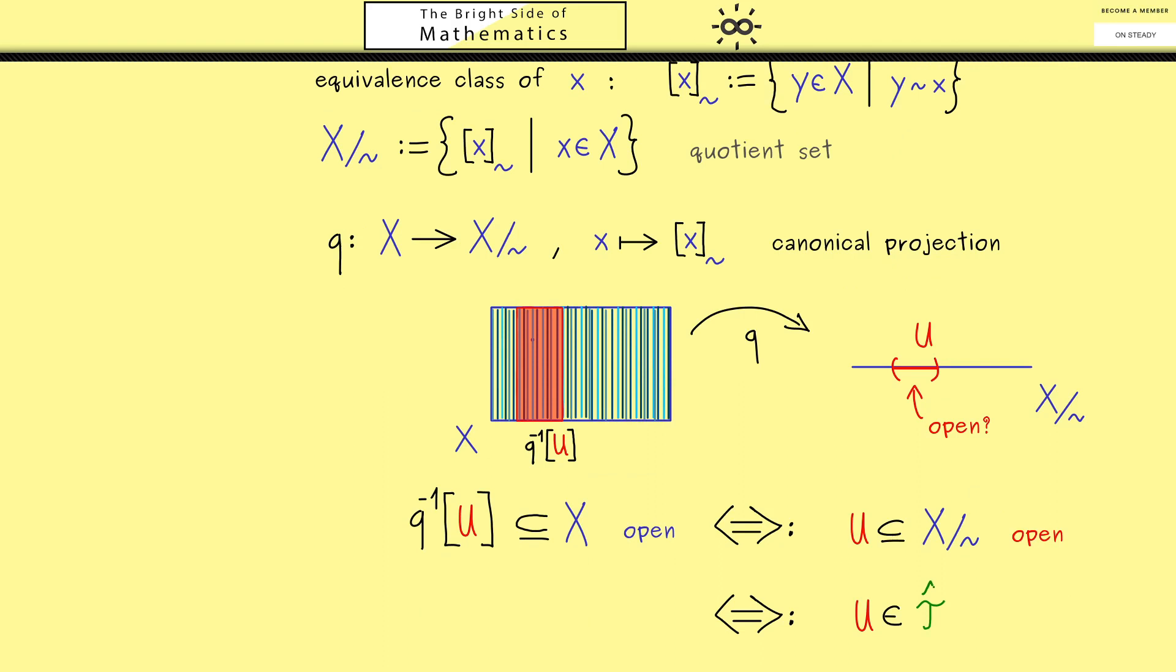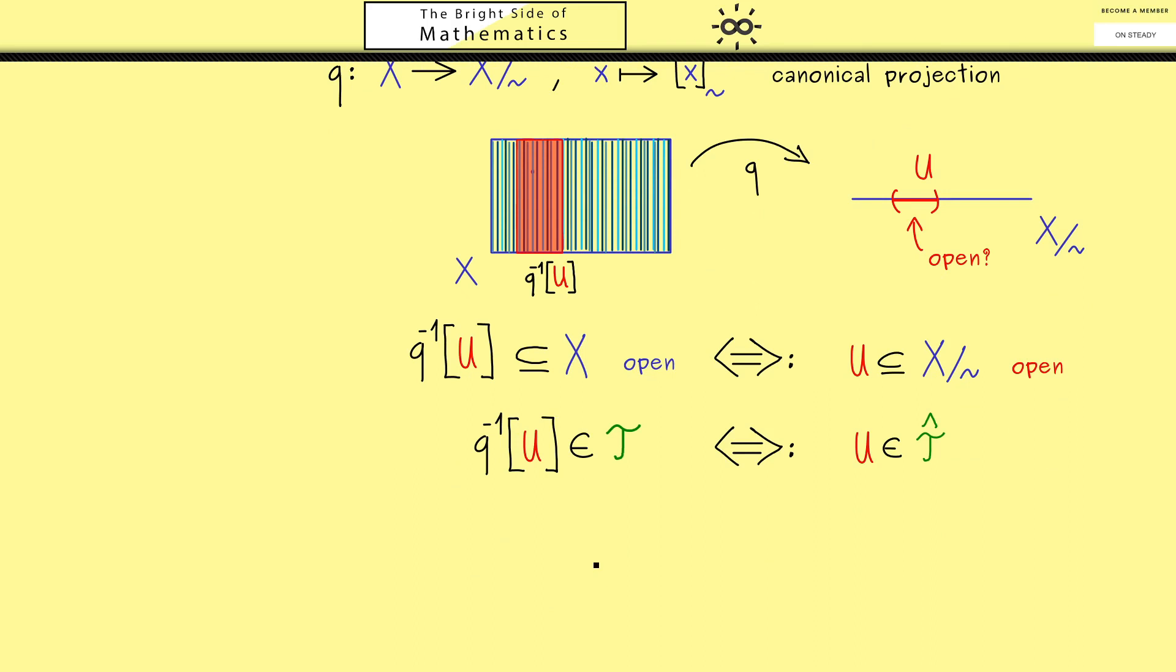Of course with this you know we have defined a new topology, and maybe for the moment let's call it τ hat. In other words, U is in τ hat if the preimage is in the original τ. Indeed, what we have to do is to check that all the properties of a topology are fulfilled here. However, it's not hard to verify the three properties. This is simply because the preimage operator acts very nicely with intersections and unions. Hence the result is in a natural way we get a topology on our quotient set. And it's simply called the quotient topology.